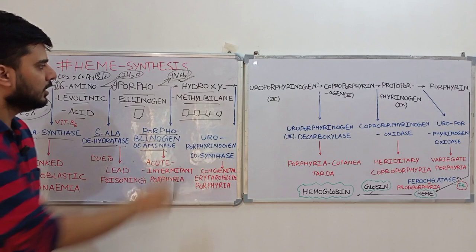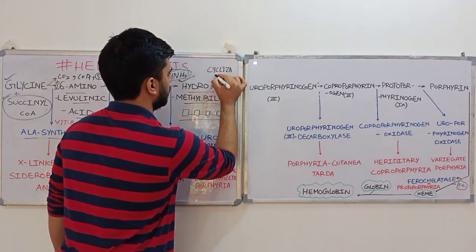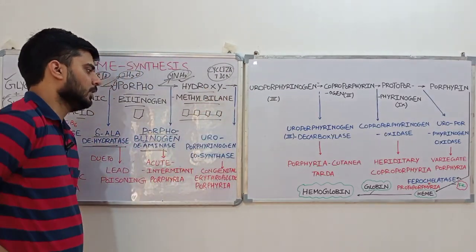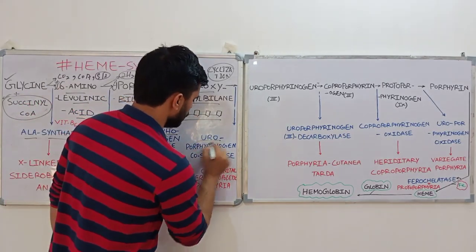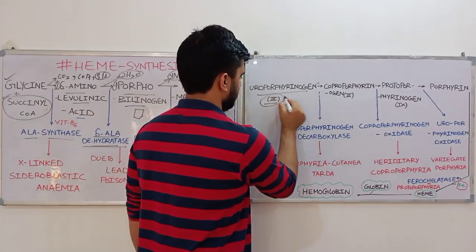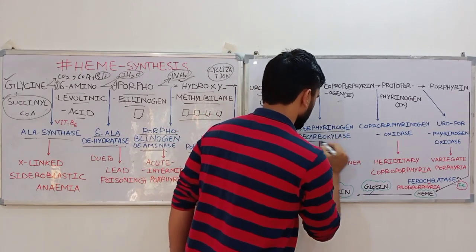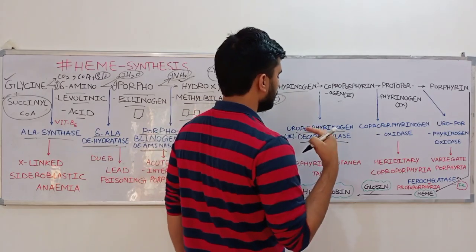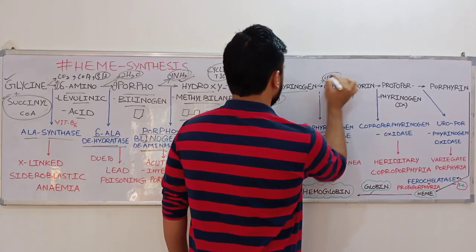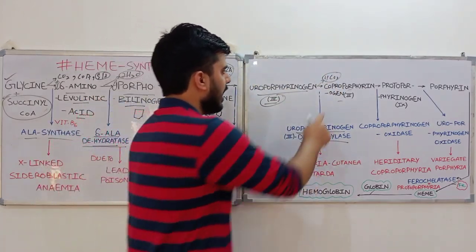After this, cyclization occurs: the linear tetrapyrrole is converted into a ring structure in the presence of the enzyme uroporphyrinogen cosynthase, forming uroporphyrinogen III. Uroporphyrinogen III is then converted into coproporphyrinogen III by uroporphyrinogen decarboxylase. Since it is a decarboxylase, four CO2 molecules are released — one from each position of the ring-shaped tetrapyrrole.